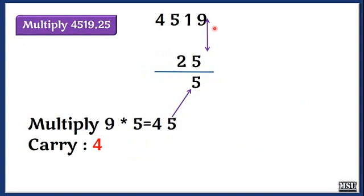Step number 1 is we are going to multiply the rightmost bit. So 9 into 5 is 45. I am writing 5 here and then 4.